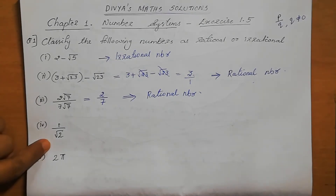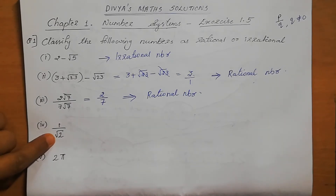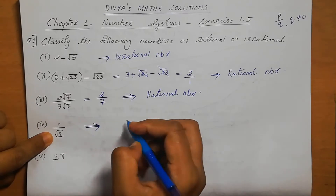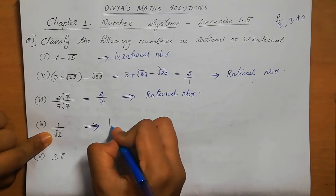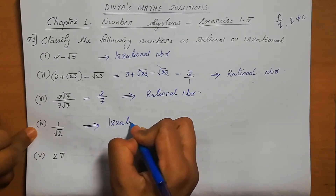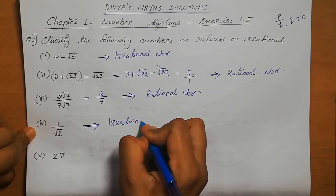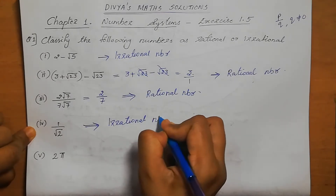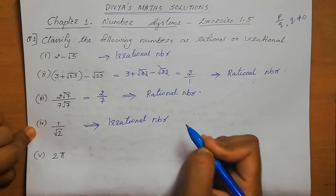Fourth one: 1 by root 2. Root 2 is an irrational number, so 1 by root 2 is also an irrational number.